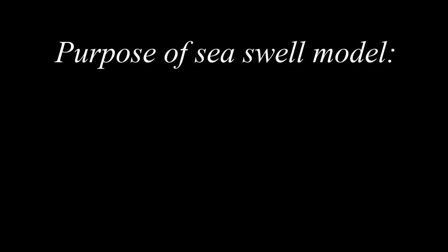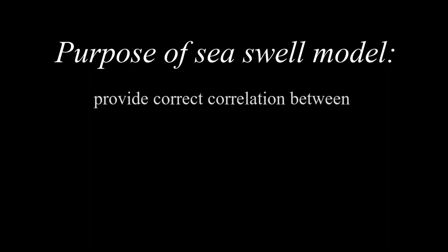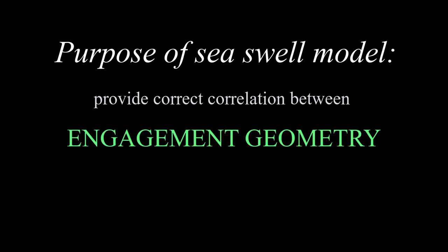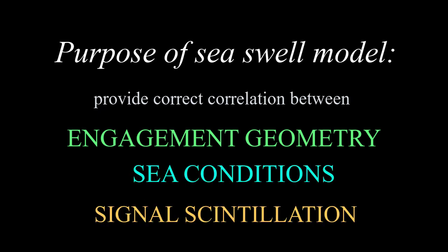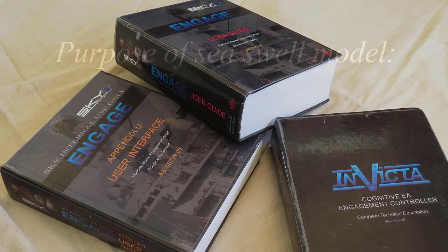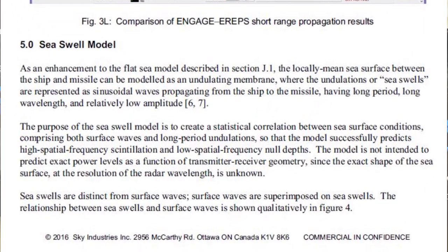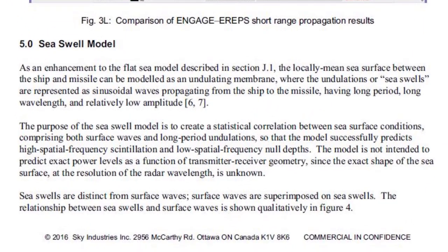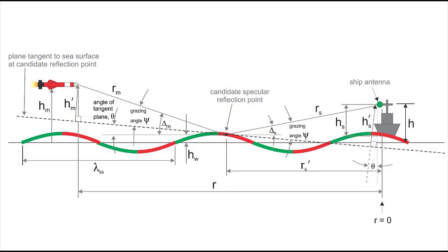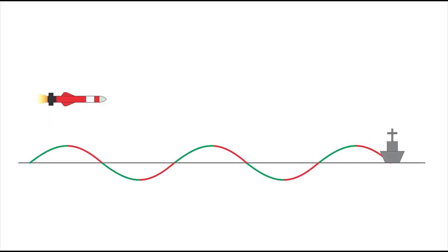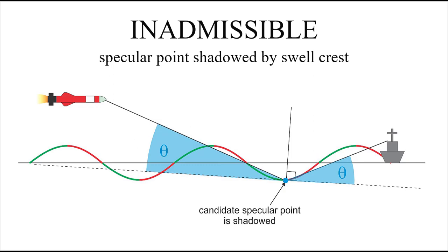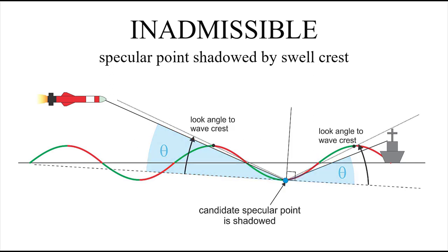The basic idea of the sea swell model is to automatically provide a correct correlation between the engagement geometry, sea conditions, and signal scintillation at the receiver. A mathematical model for sea swell propagation was created and coded into a DLL for use in ENGAGE. The derivation and coding are tricky because there's no closed-form solution for finding where the specular points are, and even after finding all the candidate reflection points, not all are admissible due to shadowing by wave crests.